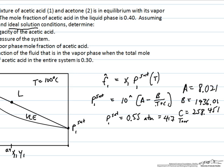To find the fugacity we simply have to multiply by the mole fraction, so we take that P1 sat, multiply by 0.40, and we find that the fugacity of component 1 in the liquid phase is equal to 0.22 atmospheres.